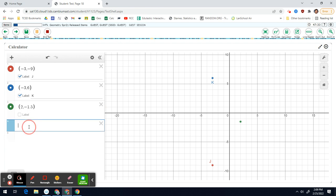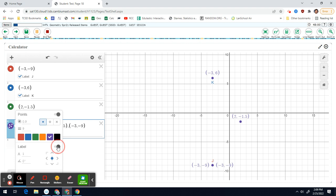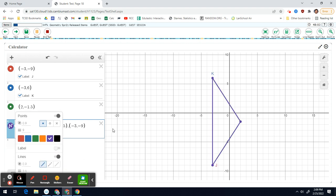Alright, well if I do connect these real fast, let me show you how to do that. If you just put them all in the same line of work, so negative 3, negative 9, negative 3, 6, I'm going to do 2, negative 1.5, and then I'm going to do negative 3, 9 again. So then I can connect them. So there's your triangle. The idea is where does this point have to be so that it's an isosceles triangle with a perimeter of 32.